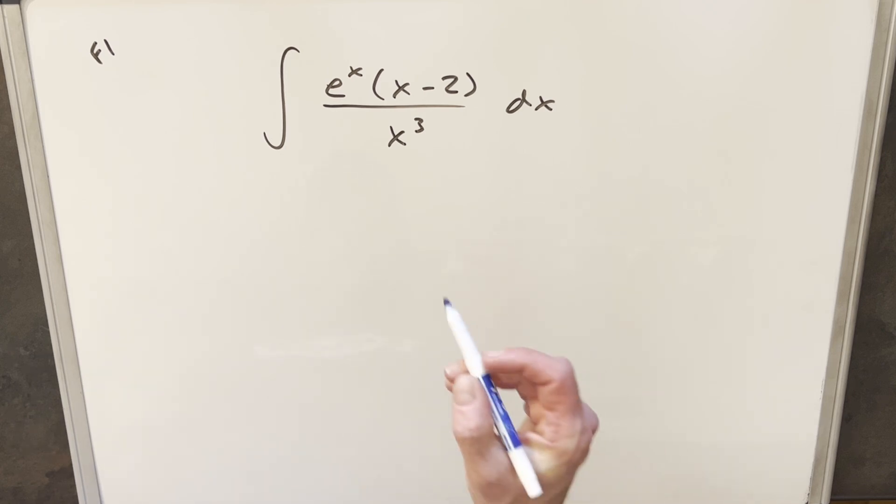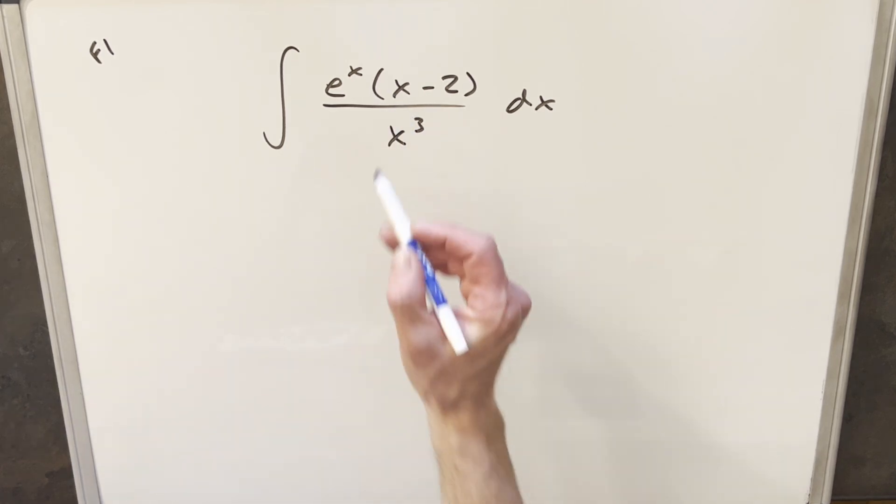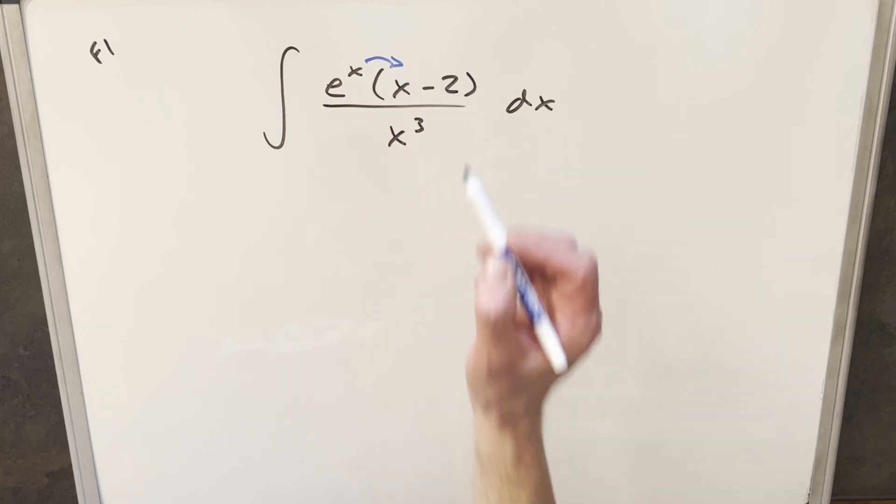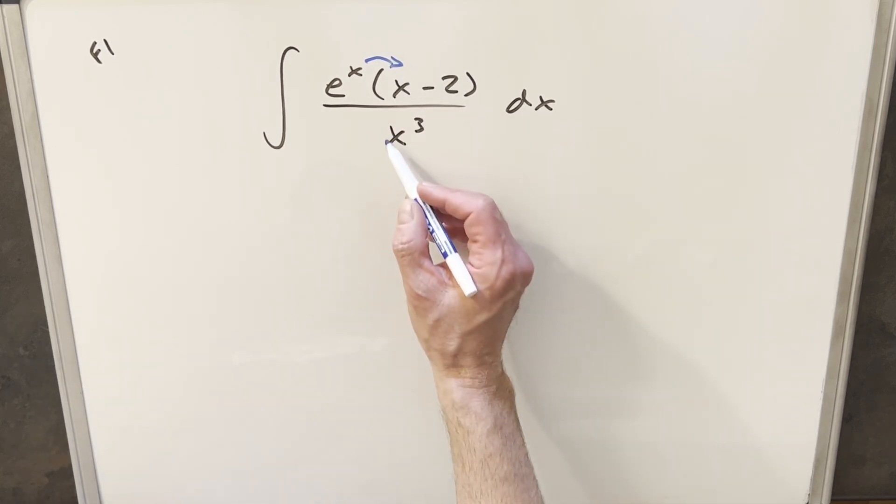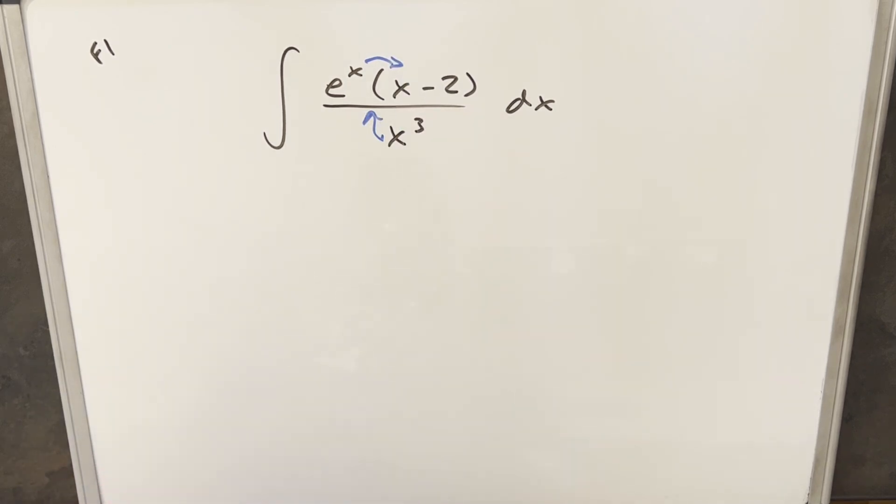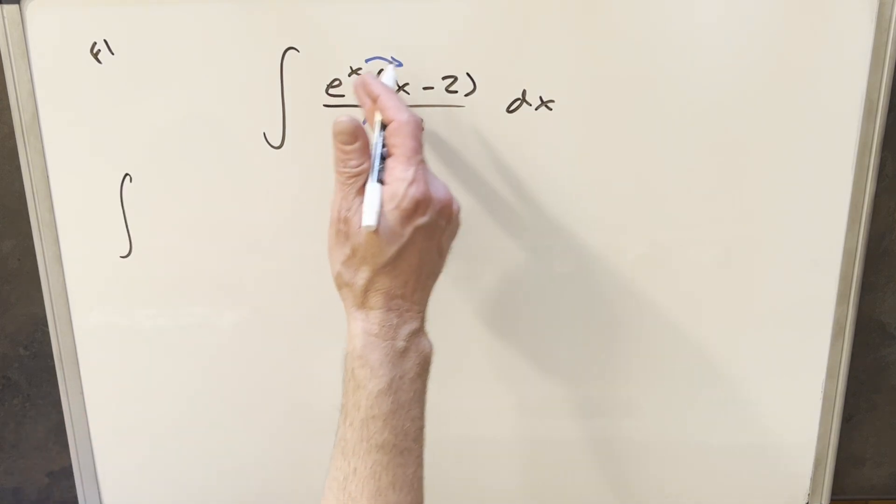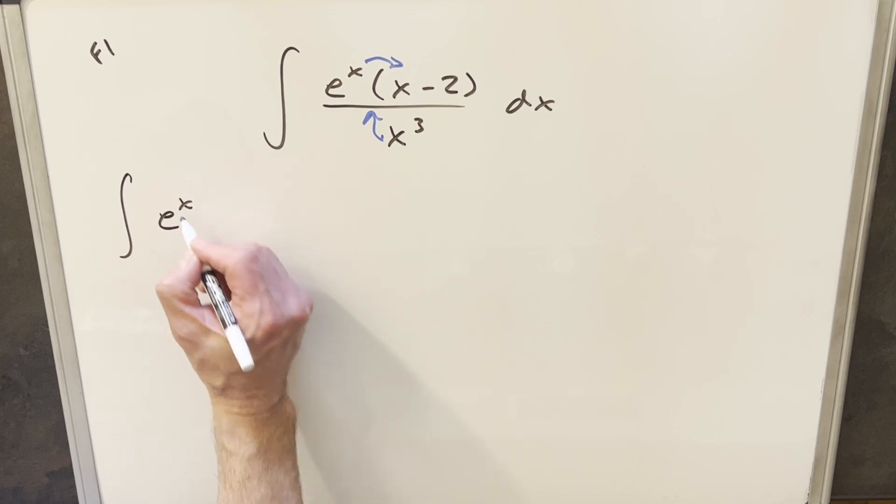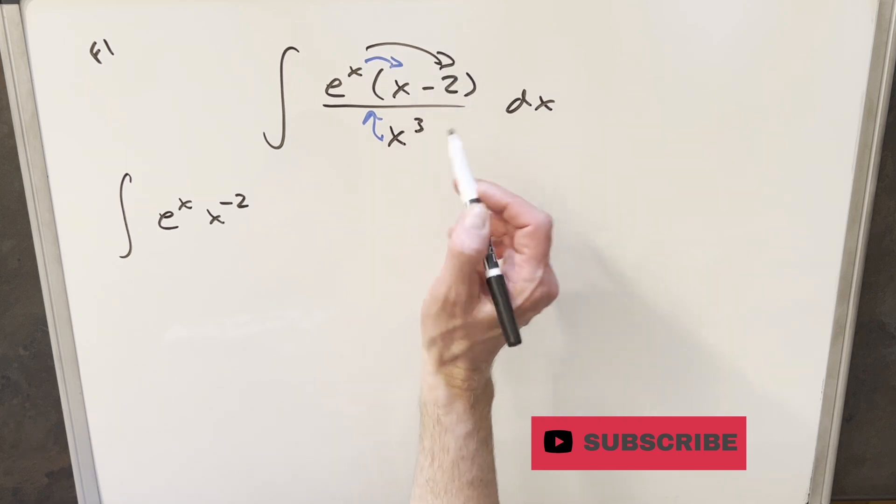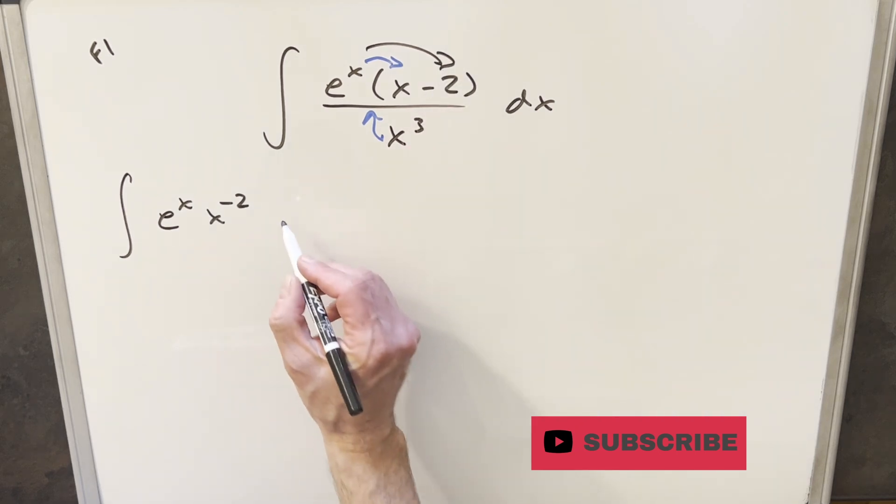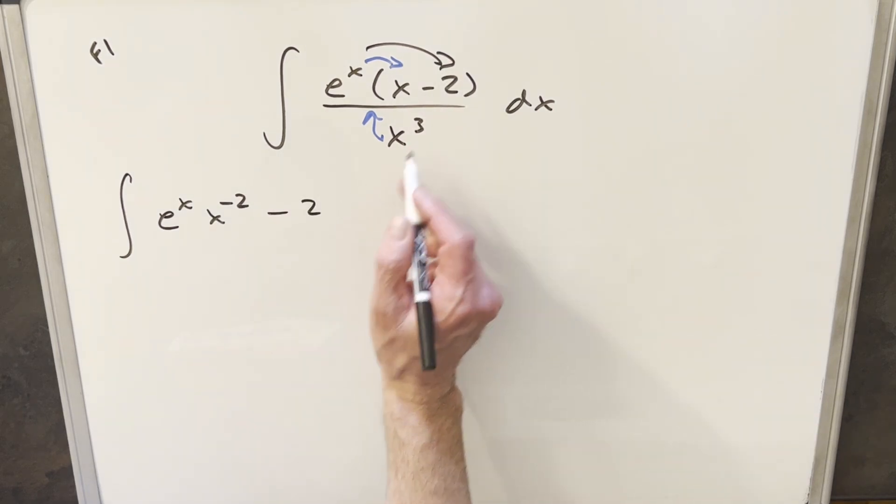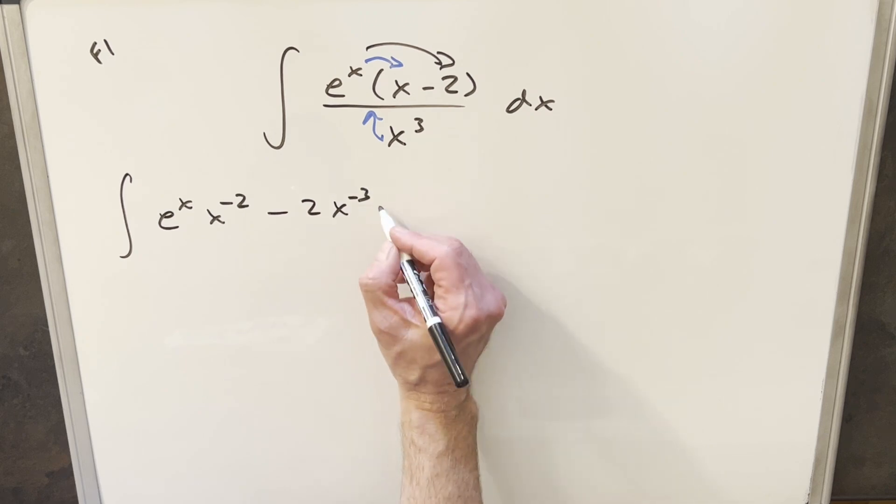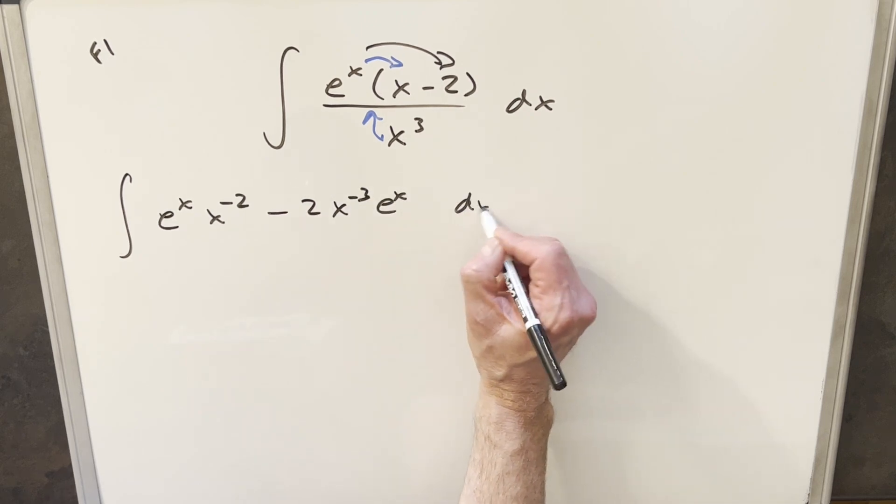What I actually wanted to do is see what happens if I rearrange this. Notice I can distribute in the e^x, and I can also divide everything through by x cubed. So if I do it that way and distribute e^x, we're going to have x over x cubed. I can write this as e^x times x^(-2). And then for the second term, when I distribute the e^x into the minus 2, we're going to have minus 2. I can write this as x^(-3) e^x dx.